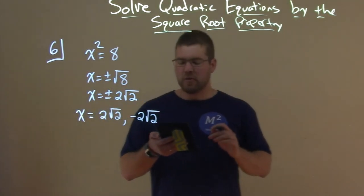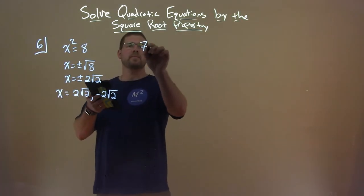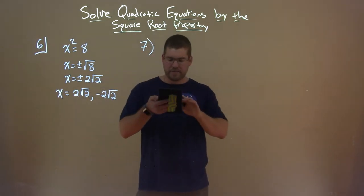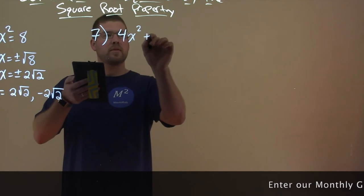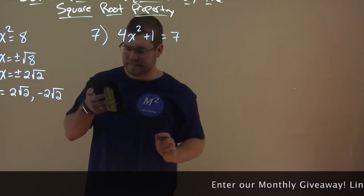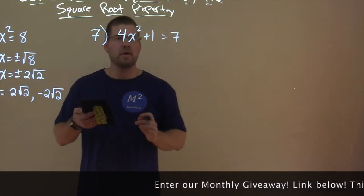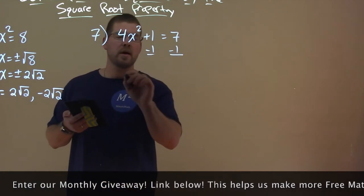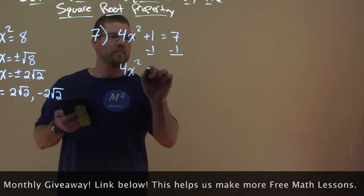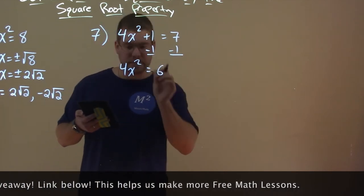Alright, let's try another example here. Let's say we have a quadratic. 4x-squared plus 1 equals 7. Alright, well our first step, we can't just dive right in. We have to subtract the 1 from both sides. That gives us 4x-squared equals 7 minus 1, which is 6.